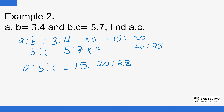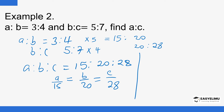Because this is a proportion, it means a/15 = b/20 = c/28. From this, a:b = 15:20, b:c = 20:28, and a:c = 15:28. The question asks for the ratio a:c, so the answer is a:c = 15:28.